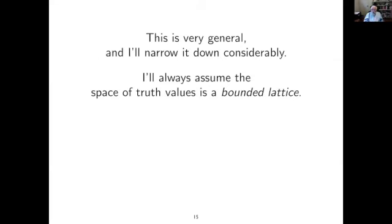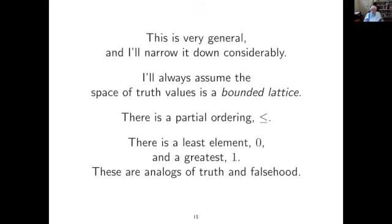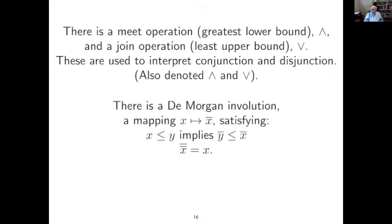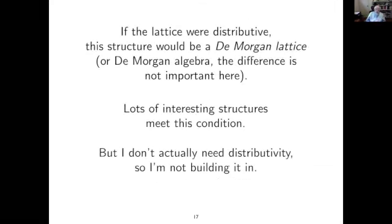I'll always assume the space of truth values is a bounded lattice — so you have a partial ordering, a smallest and a largest element (think of those as the analogs of falsehood and truth), a meet operation (greatest lower bound), and a join operation (least upper bound), and I'll always use those to interpret 'and' and 'or'. I also want there to be a De Morgan involution — a mapping that reverses the order and is an involution — which I'll use to interpret negation.